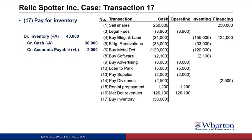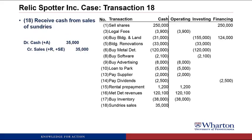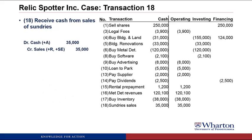In transaction seventeen, Relic Spotter paid $38,000 cash for inventory. The answer is an operating cash outflow of $38,000, because this is a core expenditure for running our business. In transaction eighteen, Relic Spotter received $35,000 cash from sales of sundries. Again, the answer is operating — a cash collection from customers, which is one of the things we use to define an operating activity.